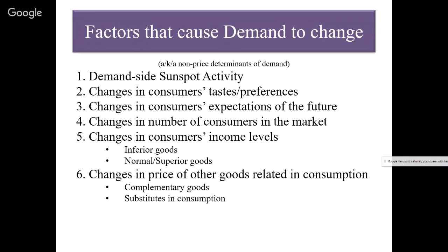Someone might buy a country club membership and then end up buying nicer clothes and golf clubs — those would be semi-complementary goods. Some products are weakly complementary: a lot of people use them together out of habit, but one is perfectly usable without the other. It is possible to use bacon without eggs, and eggs without bacon. A lot of people consume them together, but they are not strictly complementary. So if the price of bacon goes up or down, it'll have zero impact on the demand for eggs. It's only strictly complementary goods — where one product is useless without the other — where the price of one will shift the demand for the other.